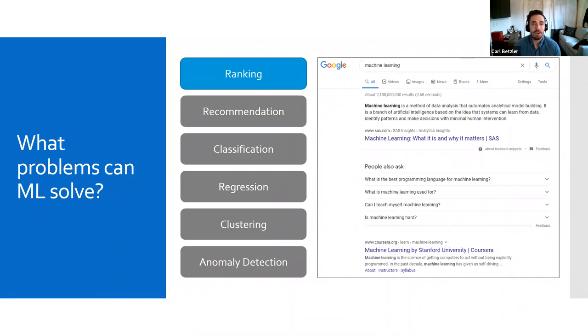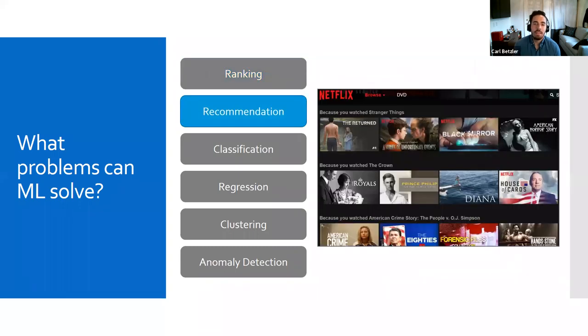With so much investment flowing into artificial intelligence, it's easy to think that it can solve any problem. But the truth is, it solves some problems very well, and others very poorly. A few of the best use cases are listed here. The first one we're going to cover is ranking, which is an algorithm designed to help users find the most relevant thing. The classic example is search. Think about Google and how it's able to determine what you're looking for based on just a few words typed into a search bar.